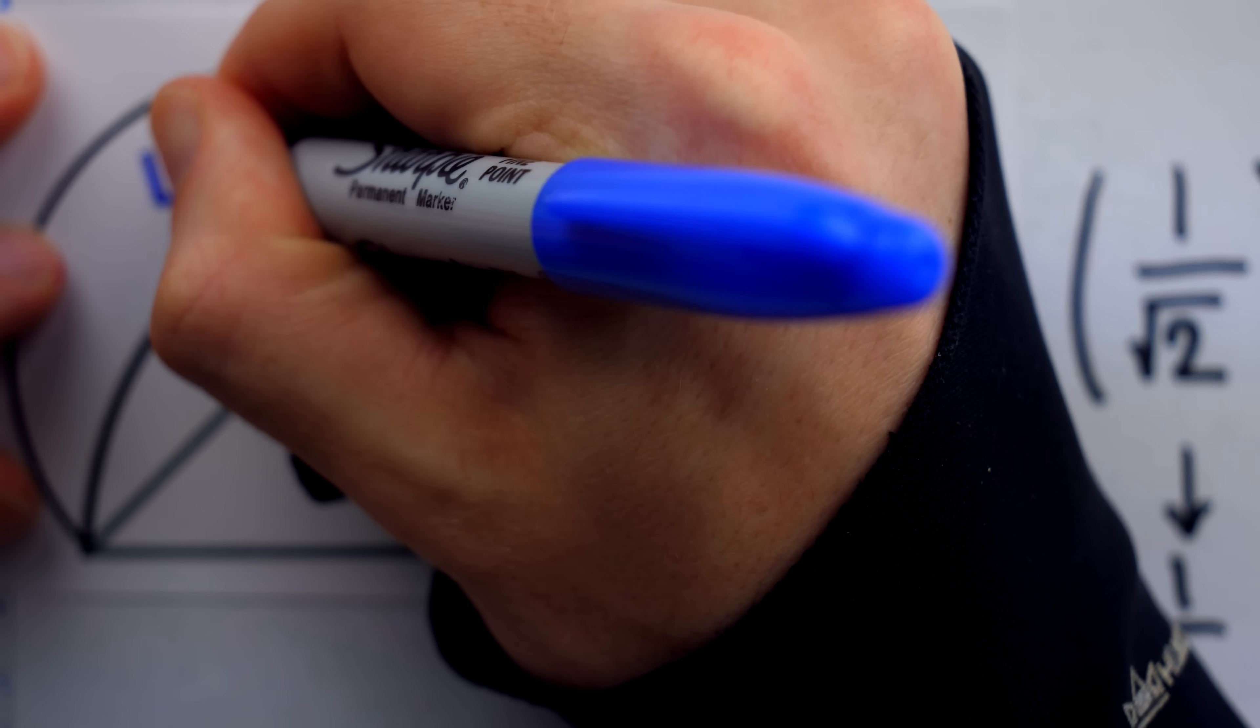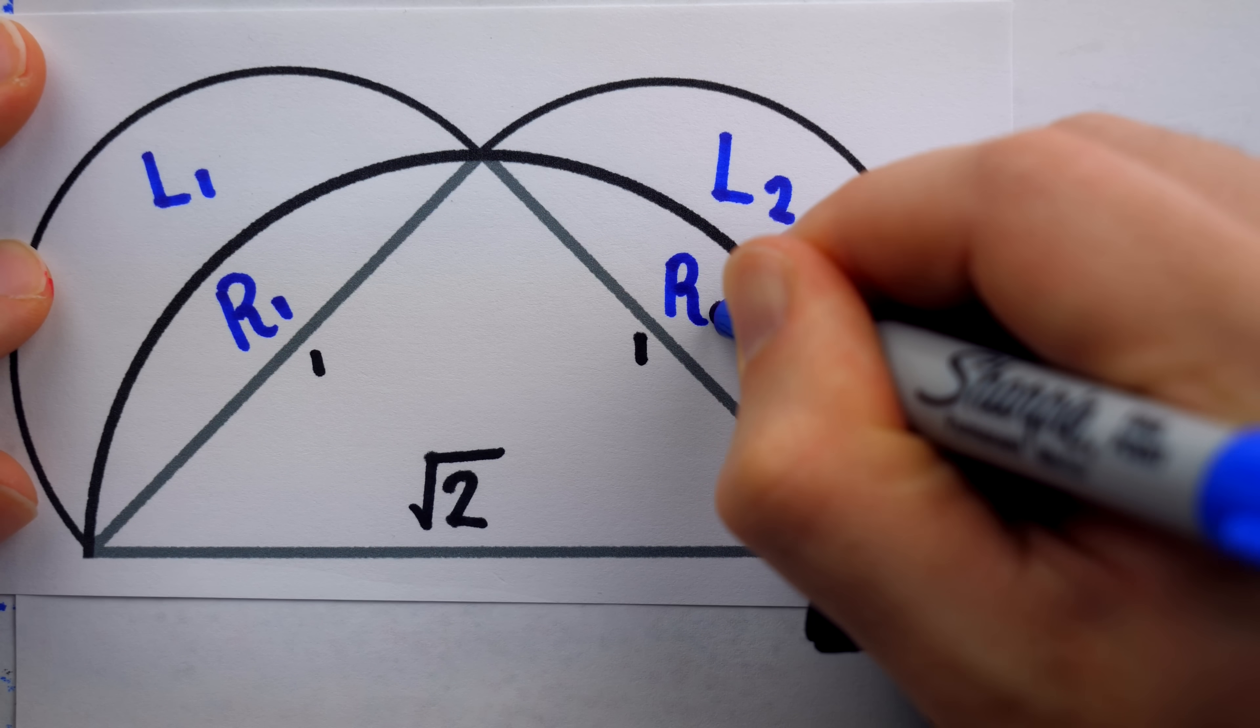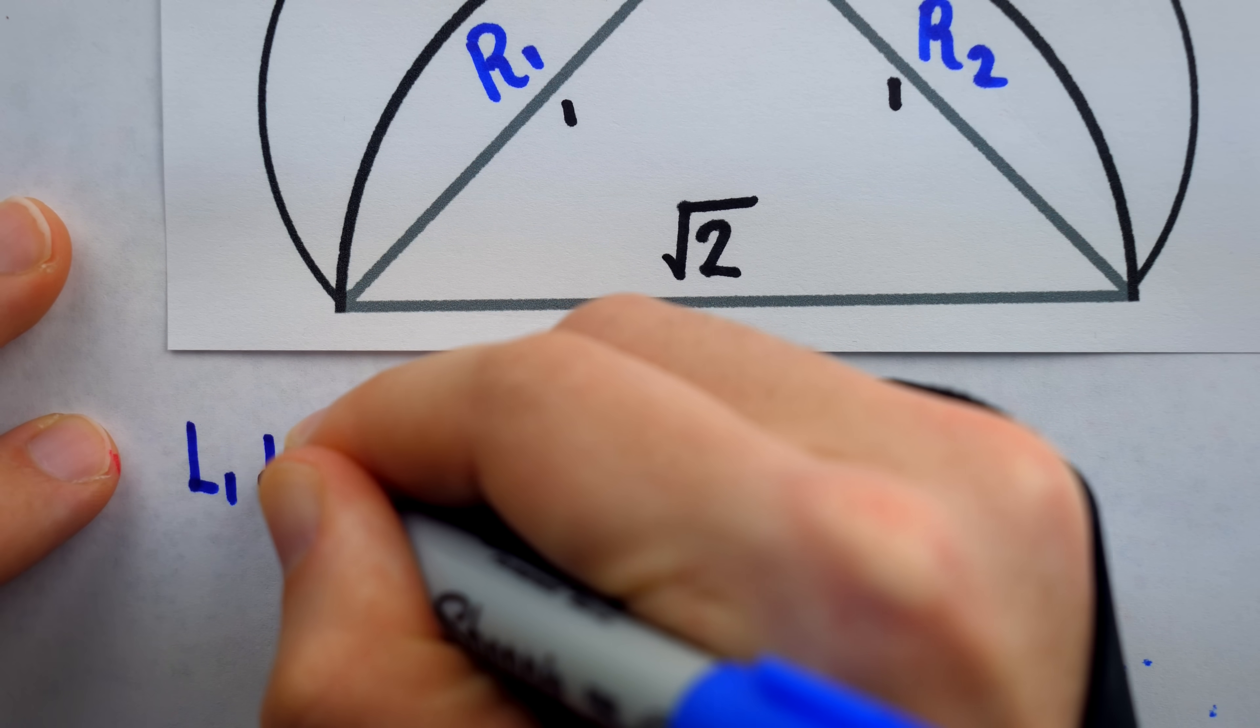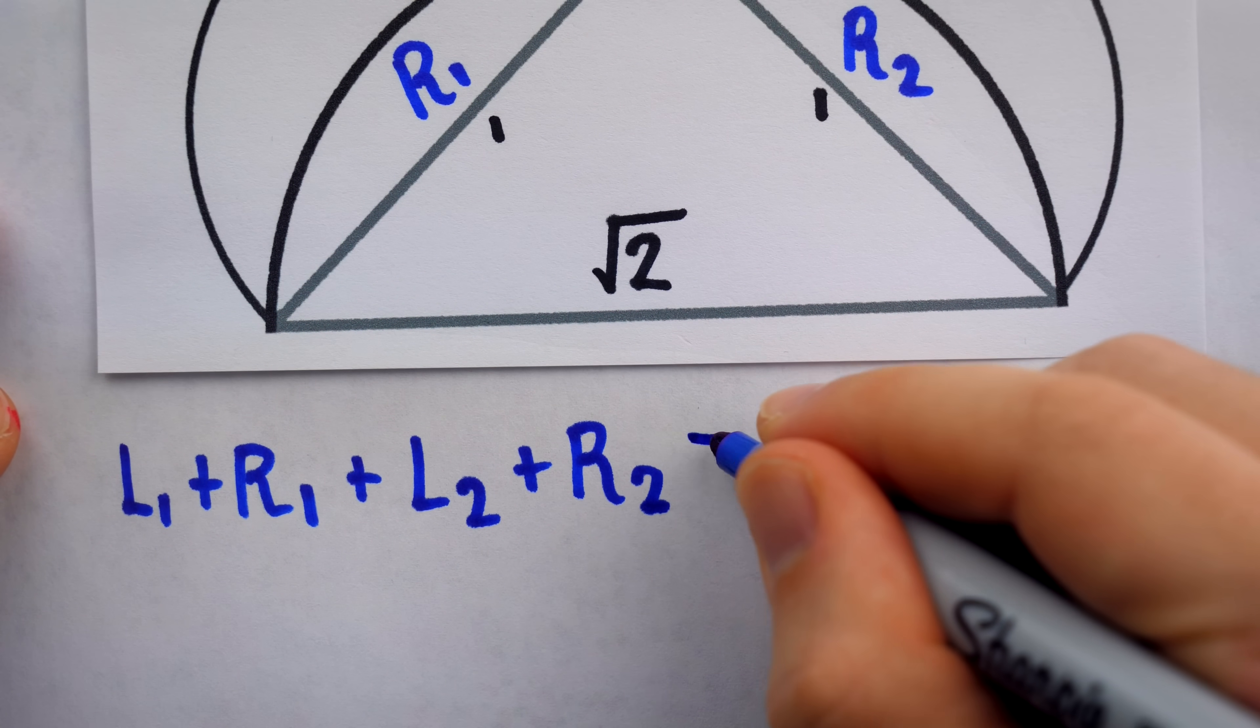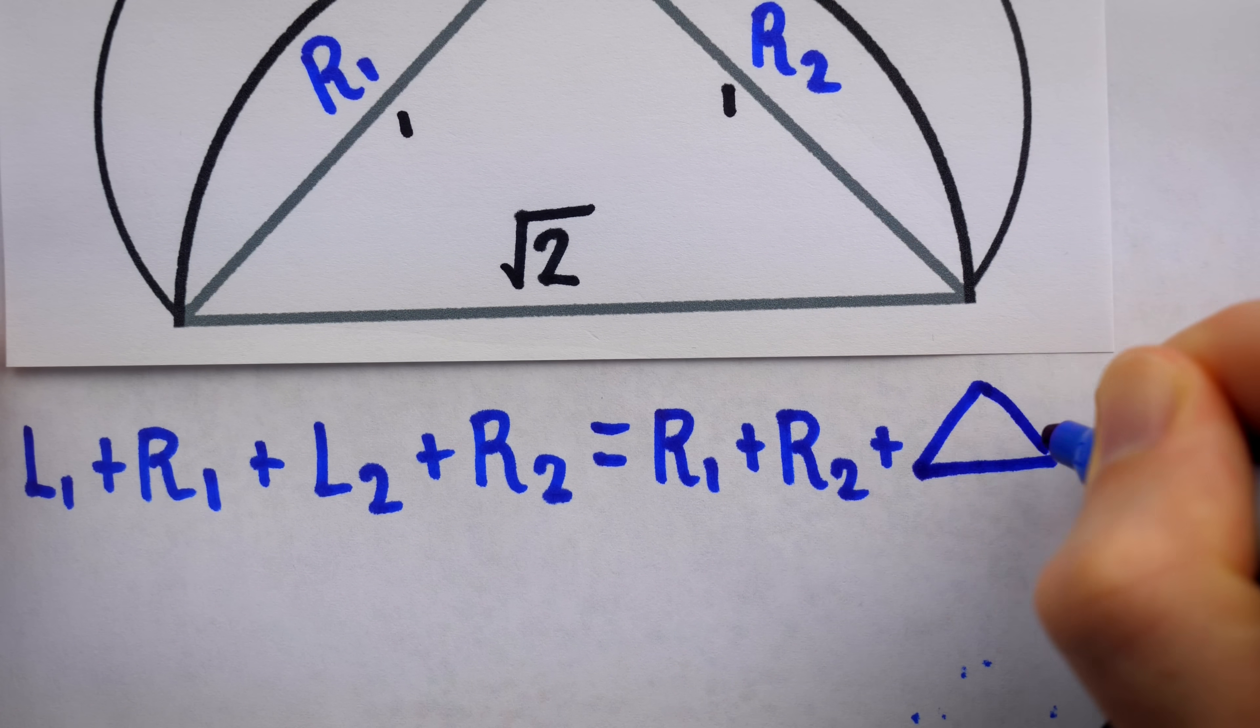Let's just label some of these regions now to complete the argument. We'll have L1 and L2 for Lune 1 and Lune 2. Then, for these two segments of the big semicircle that are cut by the isosceles right triangle, we'll call them R1 and R2. Now, we had just said that adding the areas of the two small semicircles will equal the area of the big semicircle. We can write that out in an equation. The area of the first small semicircle is L1 plus R1, and then add that to the second semicircle, which is L2 plus R2. This must equal the area of the big semicircle, which we see is R1 plus R2 plus the area of the isosceles right triangle. I'll just sketch that isosceles right triangle into the equation here for convenience.